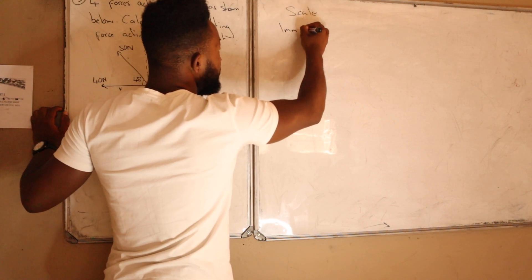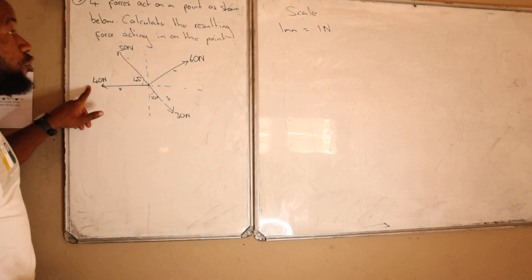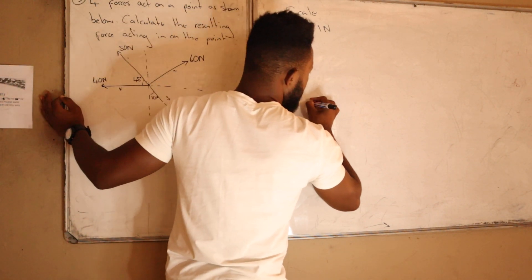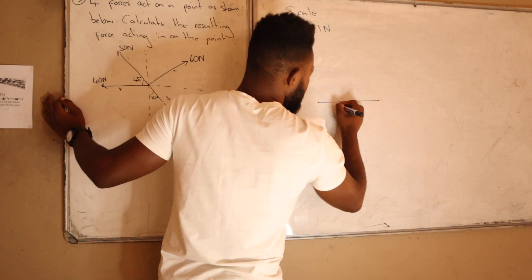So I have 40 Newtons which is going to be equal to 40 millimeters. I'm going to draw the horizontal line, which is 40 millimeters on this side.